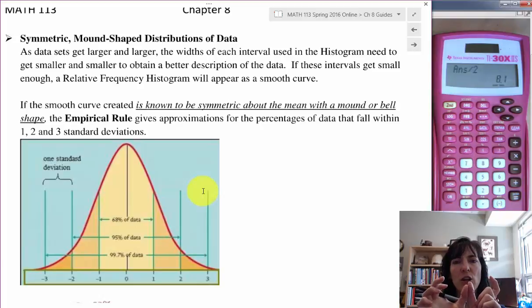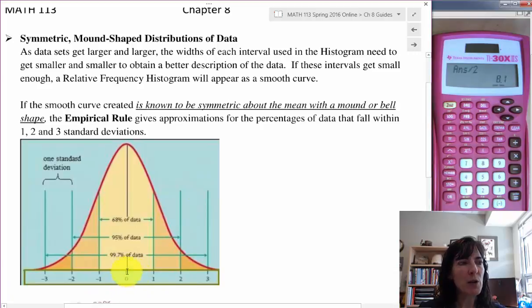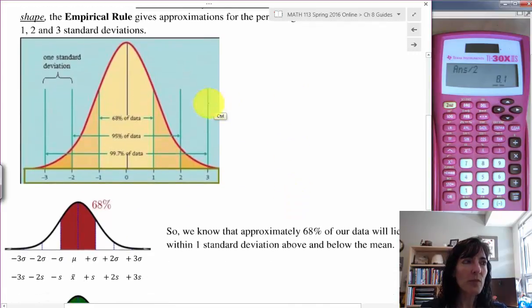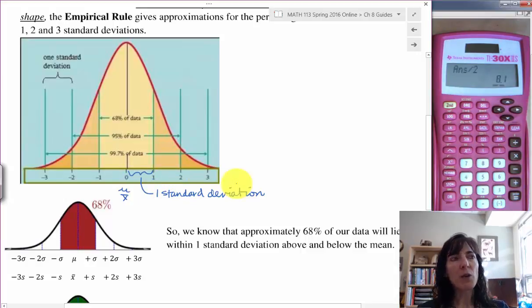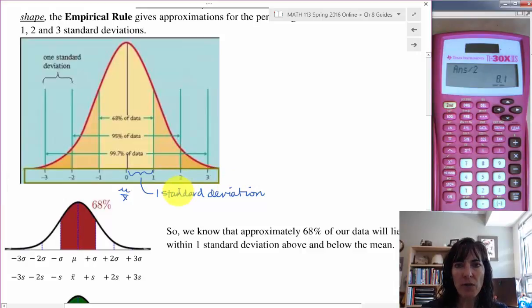And the standard deviation gives us chunks away from the mean that we can look at. We think about our mean being right here, either mu or x bar. And then we think about this distance here as being one standard deviation. When we're talking about one standard deviation away from the mean, we could go to the left or we could go to the right. So over here we also have one standard deviation away from the mean.